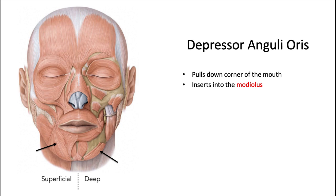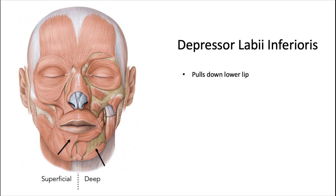The depressor anguli oris pulls down, or depresses, the angle of the mouth. It originates from the mental tubercle and the lower border of the mandible, and like the other anguli oris muscles, it inserts into the modiolus. The depressor labii inferioris does exactly what its name says — it depresses the inferior, or lower, lip.